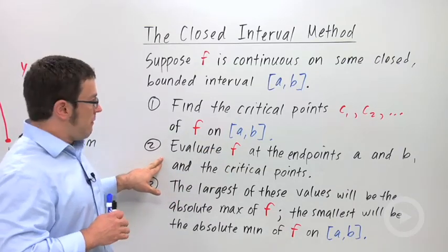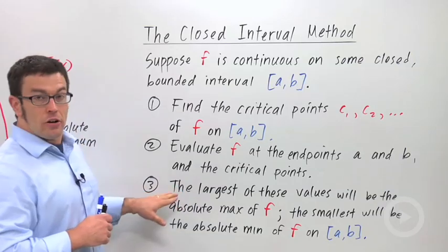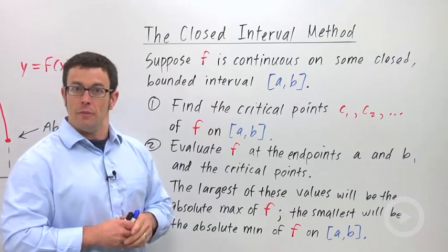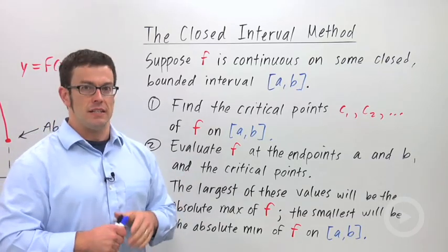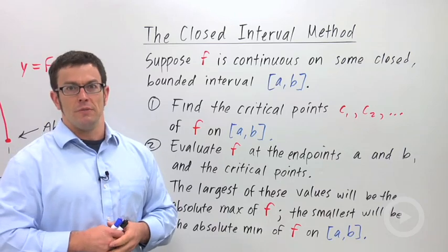Second, evaluate f at the endpoints and at all the critical points. The largest of these values is going to be the absolute maximum, and the smallest will be the absolute minimum. And that's it. It's a three-step process, very easy to use, and this is what we're going to use in our first few problems of optimization.